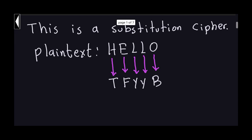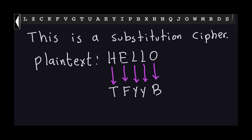So the cipher text for HELLO is TFYYB. Alice is the one doing this encryption — she takes the plain text, transforms it into the cipher text, and sends it over the insecure channel to Bob. Of course Eve will also receive the message because she's listening to that channel, just as we discussed with the Caesar cipher.